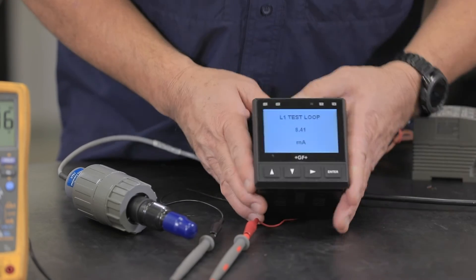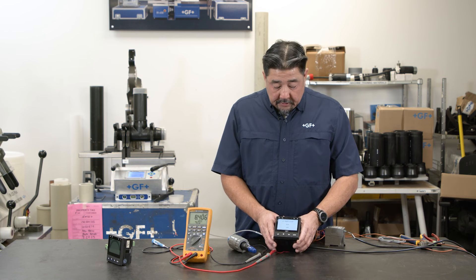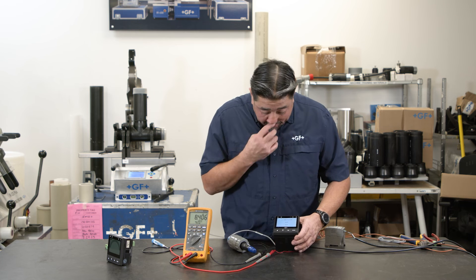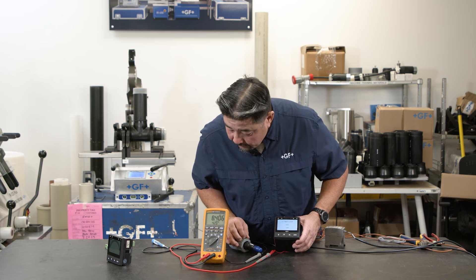Test loop. So actually the 9900 and the 9950 work as a signal generator, and we could generate 4 to 20 to test a unit. So right now 8.41. I should be showing 8.41 on my multimeter. Pretty good.